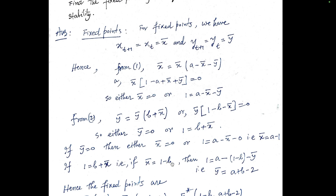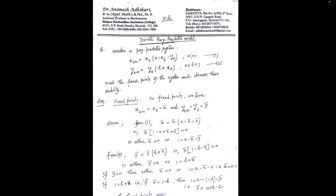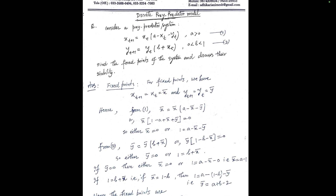With x̄ = 1 - b substituted into 1 = a - x̄ - ȳ, we get 1 = a - (1 - b) - ȳ, giving ȳ = a + b - 2. So we get equilibrium point E* = (1-b, a+b-2). In total we have three equilibrium points: E₀ = (0,0), E₁ = (a-1, 0), and E* = (1-b, a+b-2).